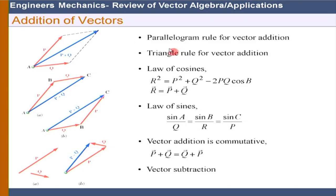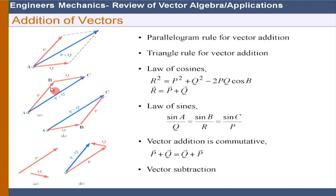Vectors can also be added based on the triangle rule. P and Q are two vectors, so P plus Q is their resultant. Using the law of cosines, the magnitude can be expressed as R² = P² + Q² − 2PQ·cos(B), where B is the angle between the two vectors. Similarly, the law of sines can be applied: sin(A)/Q = sin(B)/R = sin(C)/E.